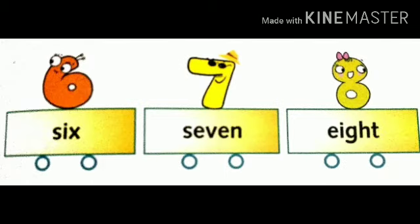Here we can see number 6, number 7, and number 8. Tell me, which number is lying before number 7? Number 6 is lying before number 7. Before means pehle. And which number is lying before number 8? Before number 8 is lying number 7. Before means pehle.